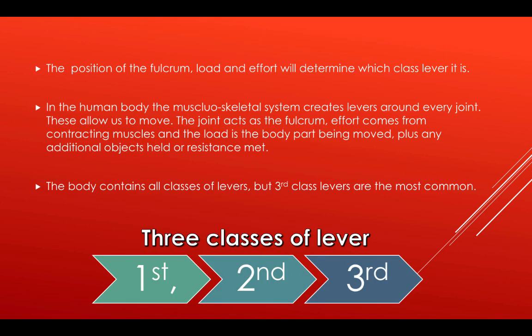The position of the fulcrum, load and effort will determine which class of lever it is. In the human body, the musculoskeletal system creates levers around every joint. These allow us to move. The joint acts as a fulcrum, the effort comes from the contracting muscles, and the load is the body part being moved, plus any additional object held or resistance met.